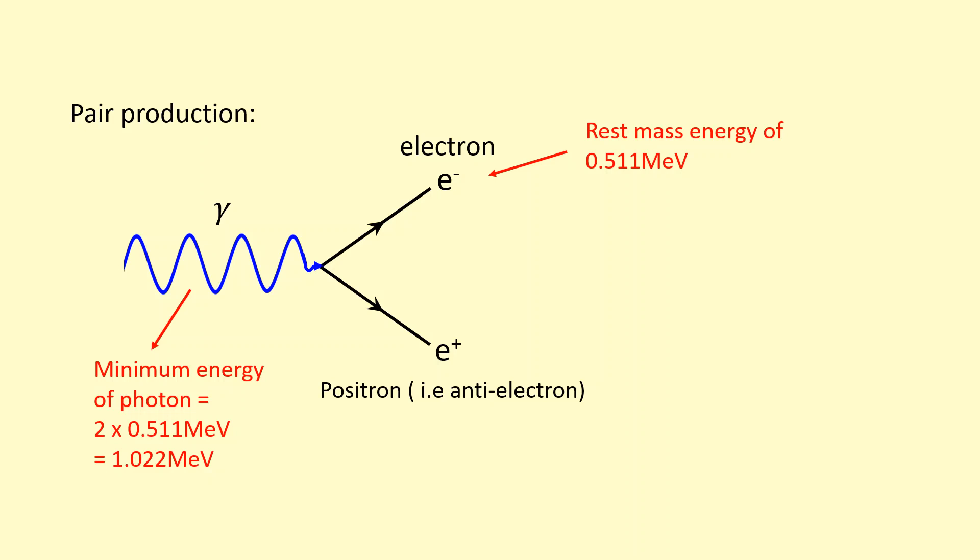In reality, it's going to have to have more than that because momentum needs to be conserved. This gamma photon does have momentum in that direction. Even though it doesn't have mass, it does have momentum going that way. So these electrons will need to have overall momentum going in that direction as well to conserve momentum.